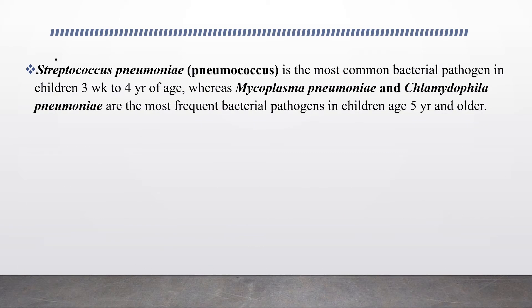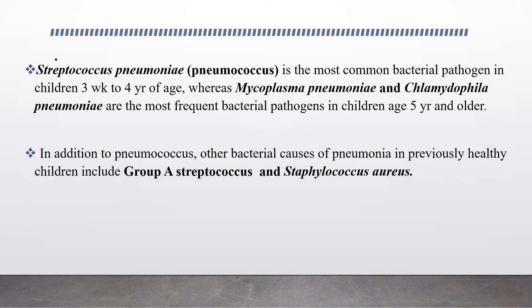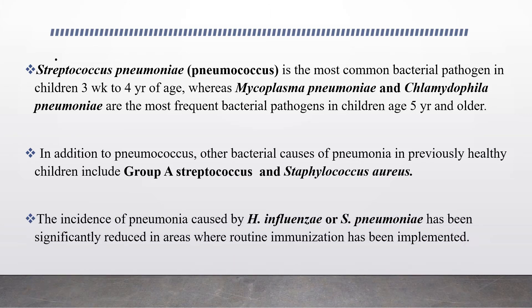Streptococcus pneumoniae, or pneumococcus, is the most common bacterial pathogen in children between three weeks to four years of age, whereas Mycoplasma pneumoniae and Chlamydia pneumoniae are the most frequent bacterial pathogens in children aged five years and older. In addition to pneumococcus, other bacterial causes of pneumonia in previously healthy children include Group A Streptococcus, or Streptococcus pyogenes, and Staphylococcus.